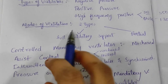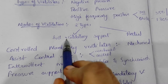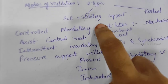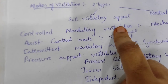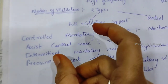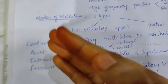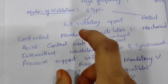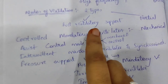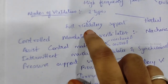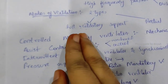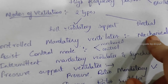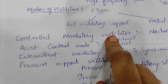Now, modes of ventilation. There are two types: full ventilatory support and partial ventilatory support. The first mode is controlled mandatory ventilation. In this mode, a fixed ventilation is set and there is no provision for spontaneous breathing effort. It is given mainly during intra-operative and immediately post-operative periods.